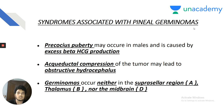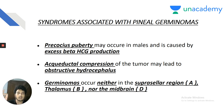Syndromes associated with pineal germinomas: precocious puberty may occur in males caused by excess beta-HCG production. Aqueduct compression may lead to obstructive hydrocephalus. Signs of raised ICP in neonates and infants are less visible because skull bones are flexible. Germinomas occur in the suprasellar region — not in the thalamus nor the midbrain. If you answer midbrain, you cannot justify the precocious puberty — it is the pineal gland compressing the midbrain.